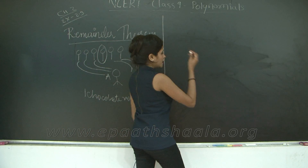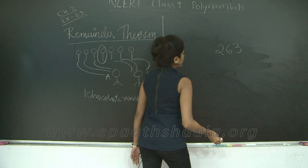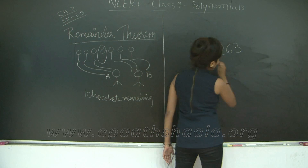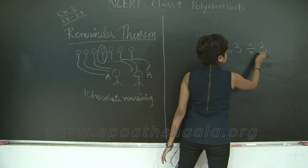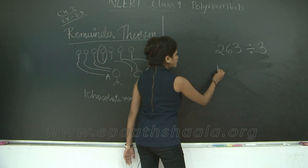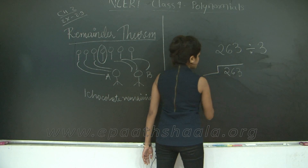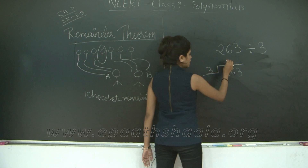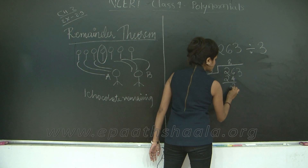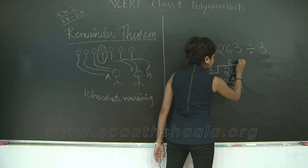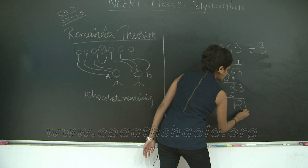So let's say I have the number 263 and I want to divide it between 3 kids. I am going to follow the normal division method: 263 divided by 3. 3 eights are 24, 3 sevens are 21. So my remainder here is 2.